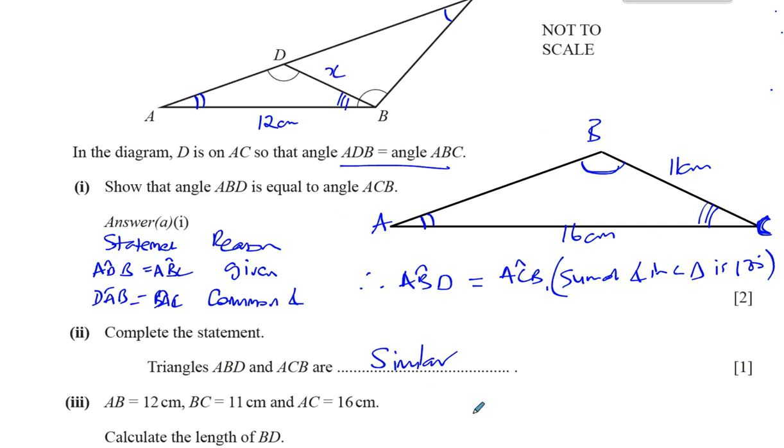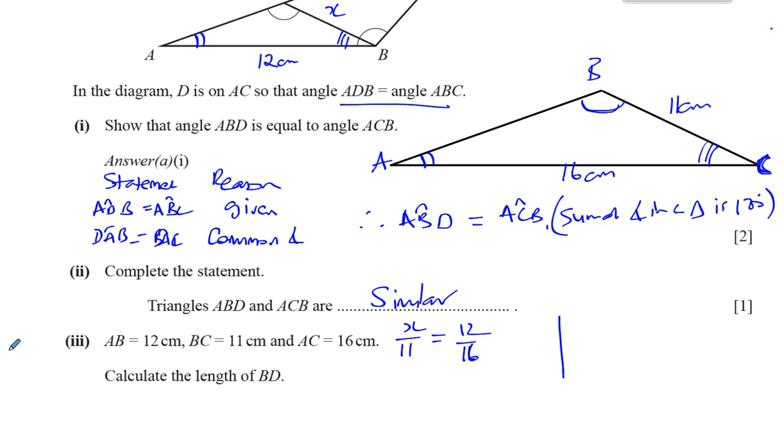So now what we can do here, we can set up some sort of a ratio. We can say that the ratio of the corresponding sides must give you the same value. They're similar triangles. So if you double one side, you double the other side, and so on. So what we can say is the ratio of X to 11 must be the same as the ratio of 12 to 16. It must go the same way. I can't say X to 11 and 16 to 12. X to 11 and 12 to 16. So if they're the same ratio, we can find where X is. So cross-multiply. X is going to be 12 over 16 multiplied by 11, which gives you an answer.